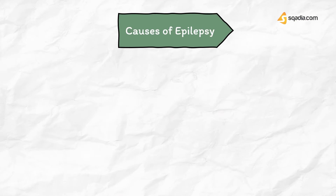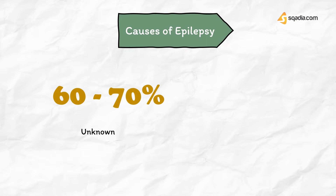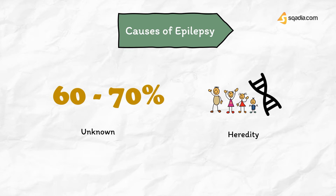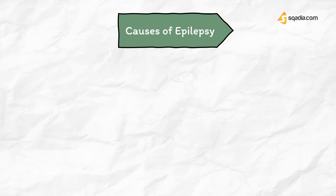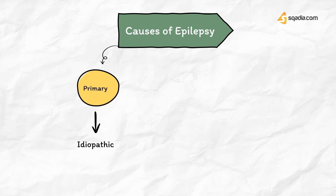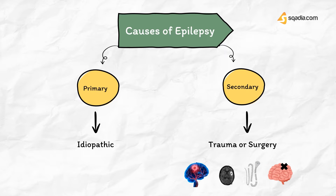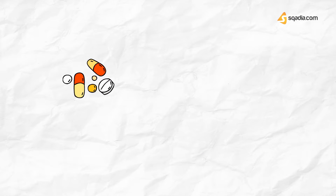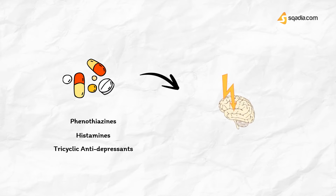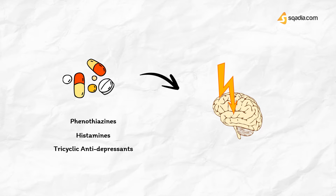The etiology is unknown in 60 to 70 percent of cases, but heredity is an important factor. Most cases of epilepsy are primary idiopathic, with no specific cause, while some may be secondary to trauma or surgery on the head, intracranial tumor, tuberculoma, cysticercosis, and cerebral ischemia. Convulsions may be precipitated in epileptics by several groups of drugs including phenothiazines, tricyclic antidepressants, and many antihistamines. Treatment is symptomatic and the same whether epilepsy is primary or secondary.